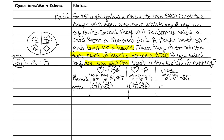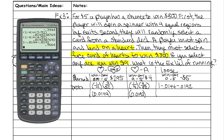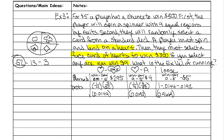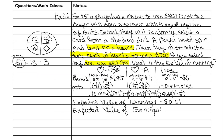For the losing probability, we'll do 1 minus the others. The decimal for the first one is 0.0144 and for the second one it's 0.0192. Subtracting both from 1 gives us 0.9664 for the probability of losing. We multiply each probability by the amount of money earned, add them together, and that gives us our expected value. The expected value of winning is negative 51 cents, meaning the expected value of running the game is positive 51 cents.